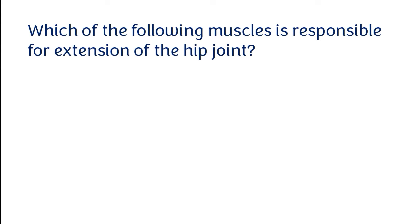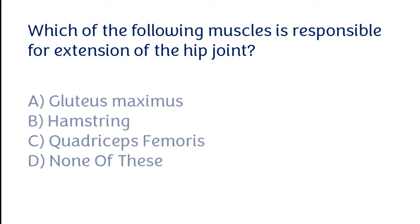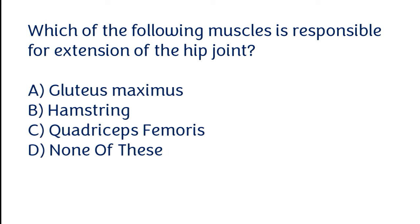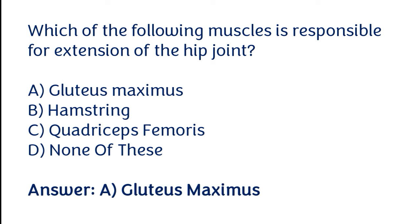Which of the following muscles is responsible for extension of the hip joint? Options: Gluteus maximus, Hamstring, Quadriceps femoris, or None of these. The correct answer is option A — Gluteus maximus muscle is responsible for extension of the hip joint.